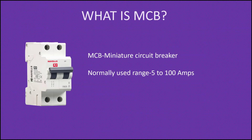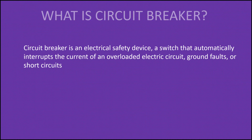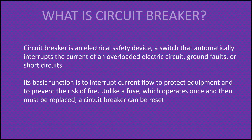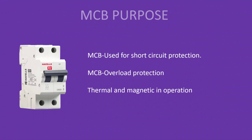What is MCB? MCB is a Miniature Circuit Breaker, normally used in the range of 5 to 100 amps. A circuit breaker is an electrical safety device that can protect the circuit or equipment from three conditions: overload, ground fault, or short circuits. Its basic function is to protect equipment, prevent fire, and avoid loss of life. MCB is used for short circuit protection and overload protection, and it will operate in both ways — thermal and magnetic.